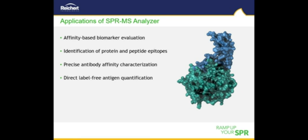Thus, the combination of SPR and mass spectrometry enables a number of possible applications, including biomarker evaluation and epitope determination, along with precise antibody affinity characterization and direct label-free antigen quantification.